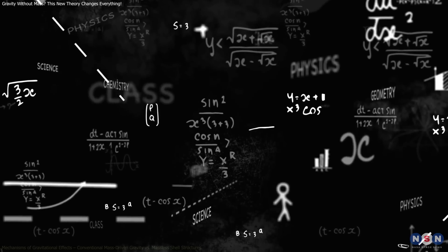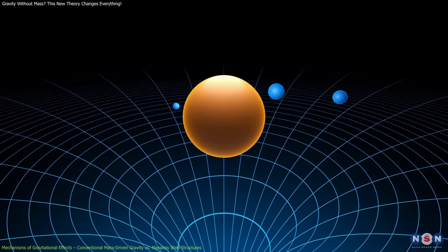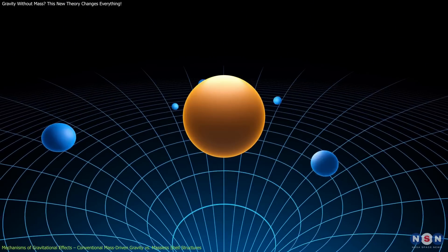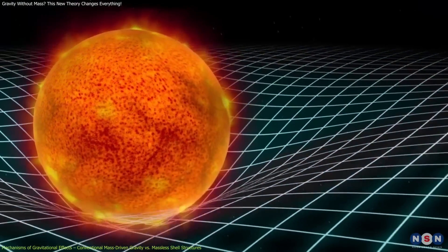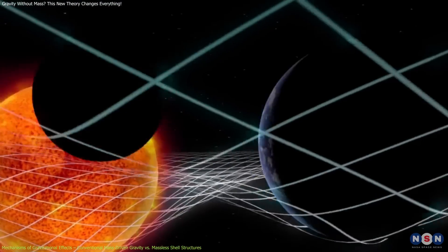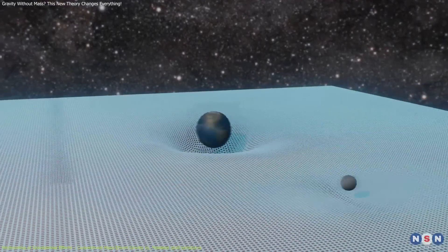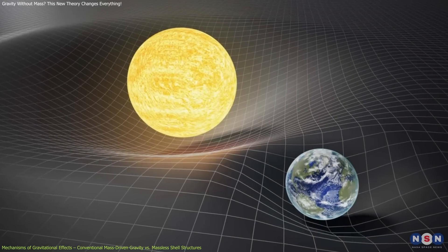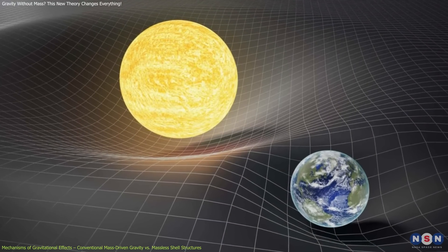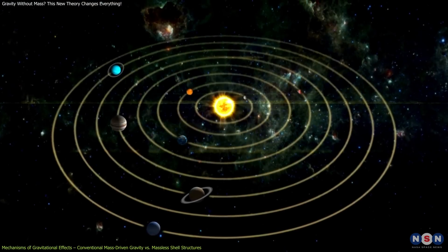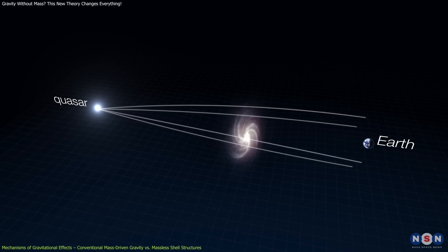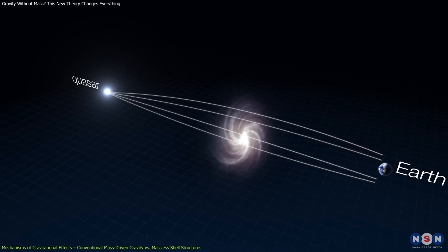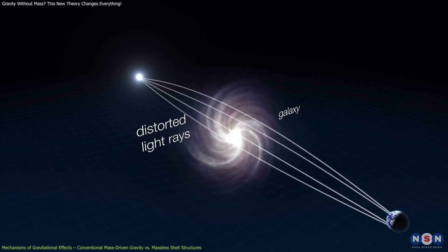In conventional physics, gravity is a result of mass warping spacetime. Massive objects create a curvature in spacetime, and other objects move along these curves, experiencing what we perceive as gravitational attraction. This model successfully explains a wide range of phenomena, from the orbits of planets to the bending of light around massive objects, a phenomenon known as gravitational lensing.